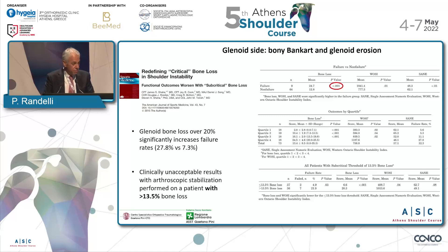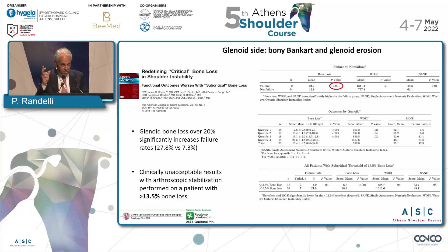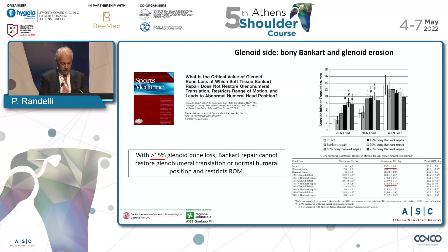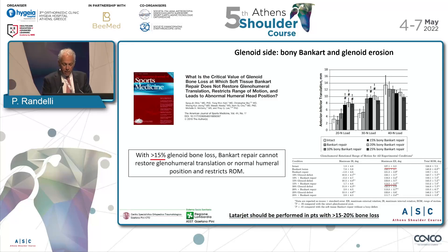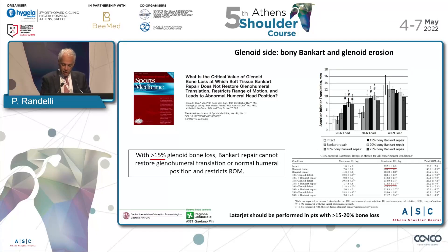But more recently, as Giuseppe already told us, we have this critical bone loss threshold that is reducing and reducing. We know that if we have glenoid bone loss over 20% — not 25% as Steve was telling us — then we have a significant increase in failure rates, and we have clinically unacceptable results if we have glenoid bone loss more than 13.5%. Even another more recent biomechanical paper shows that 15% is for sure the threshold we should not overpass.